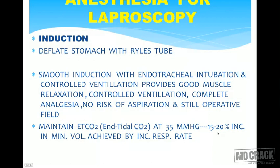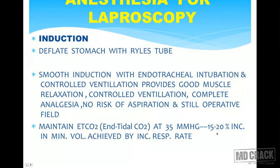When giving general anesthesia with controlled ventilation, maintain EtCO2 at around 35 mmHg, monitored on a capnograph. A 15 to 20 percent increase in minute volume is achieved by increasing respiratory rate rather than tidal volume, because with elevated EtCO2 there are chances that PO2 may fall, and to counter that you increase minute volume by increasing respiratory rate rather than tidal volume.